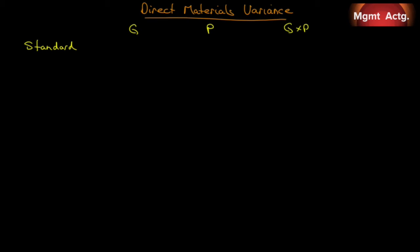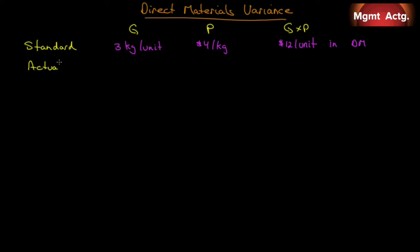We need a standard for our quantity, and we're told it's three kilograms per unit. We need a standard price, which we're told is four dollars per kilogram. So our standard cost is twelve dollars per unit in direct materials — three kilograms times four dollars per kilogram. The actual quantity used was 6,500 kilograms, and the actual price paid was three dollars and eighty cents per kilogram.